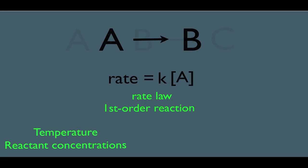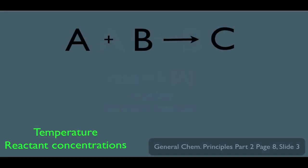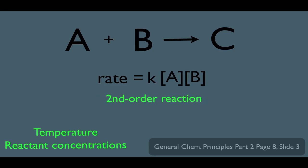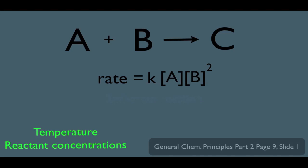Another example: if we have two reactants, A plus B going to C, the rate law could be rate equals K times concentration of A times concentration of B. This is a second-order reaction because the rate depends on both the concentration of A and B. You can also have rate laws where one of the reactants has an exponent of 2, meaning B has a greater effect on the rate than A. The overall order for that reaction would be third-order — the exponent of 1 for A plus the exponent of 2 for B.